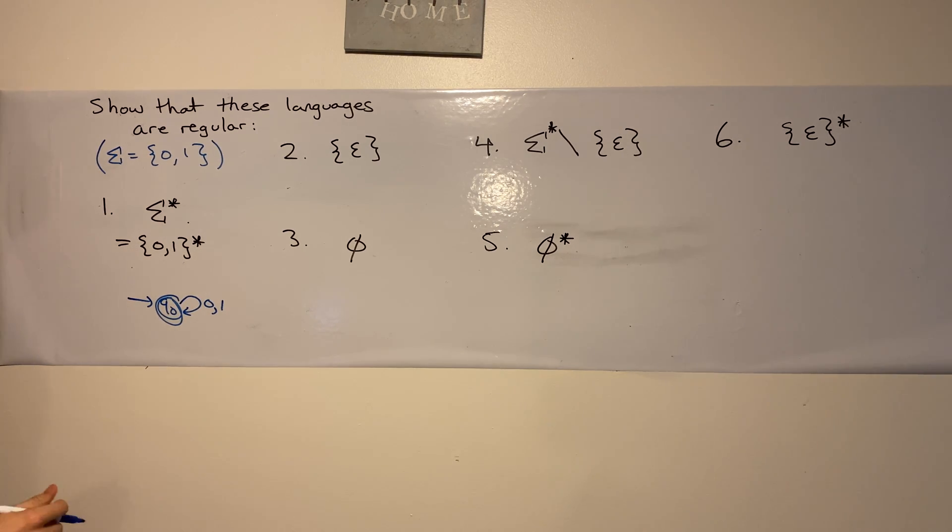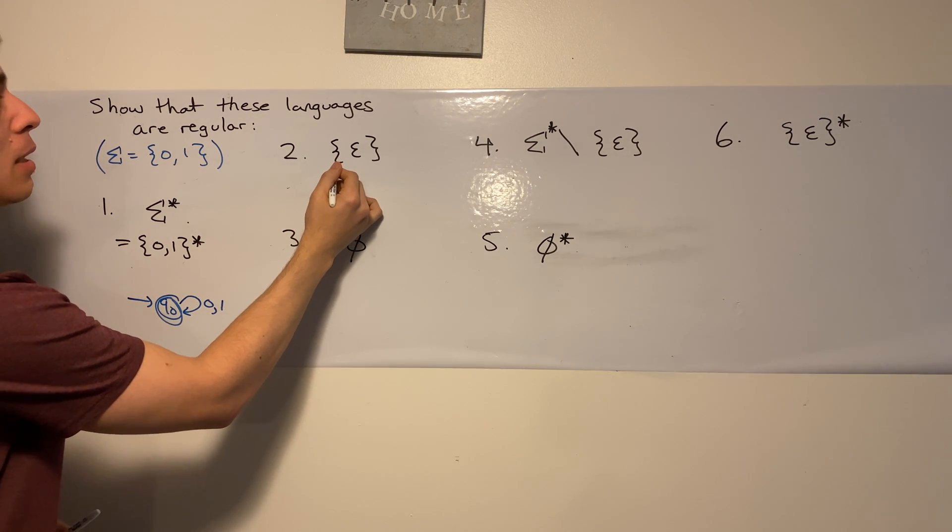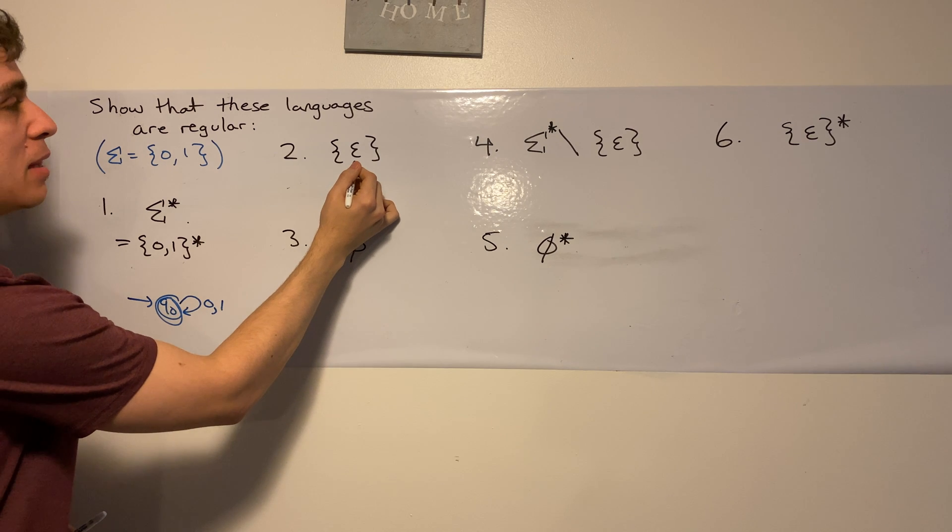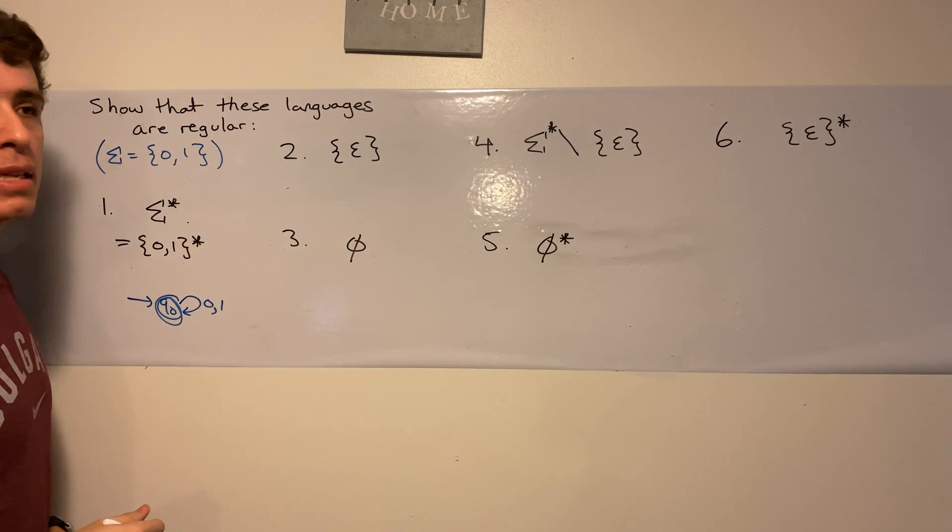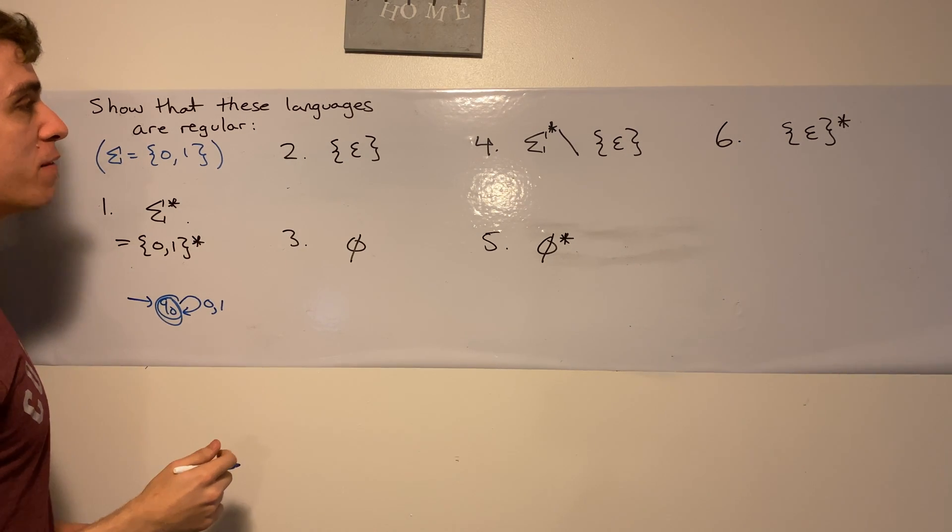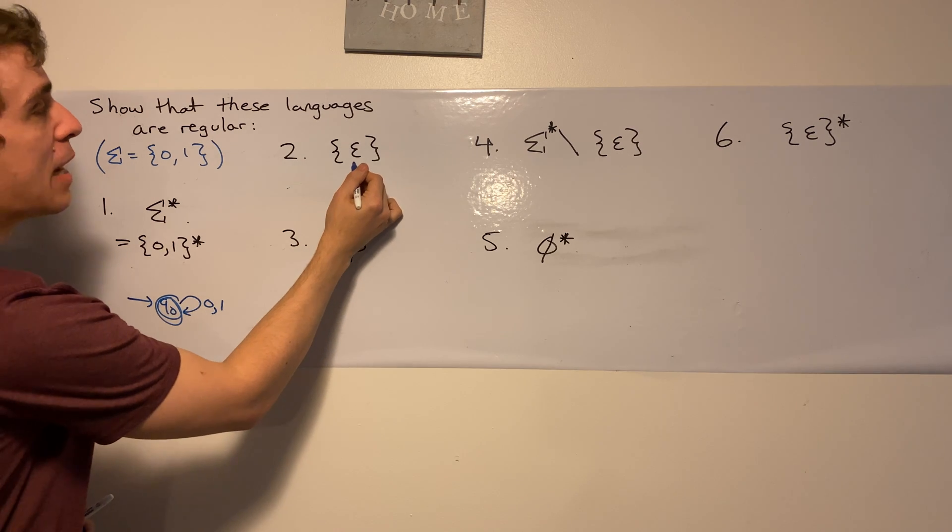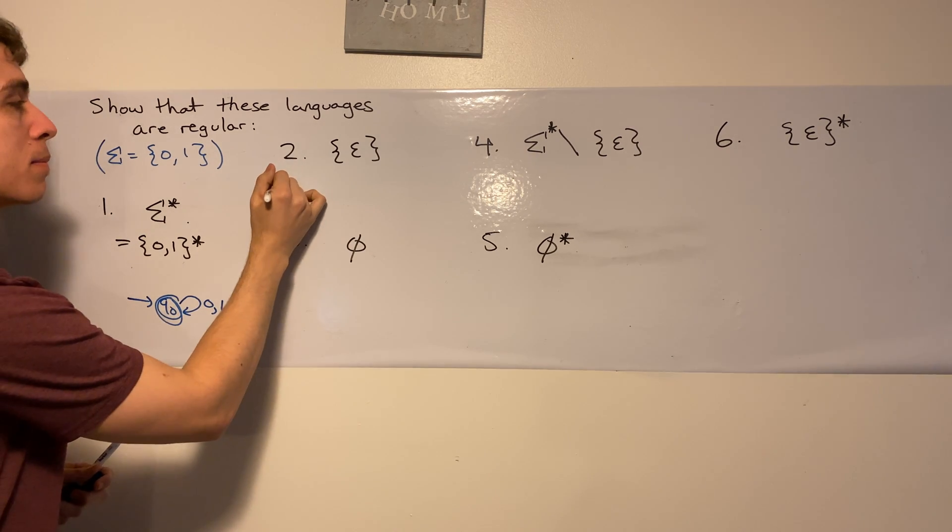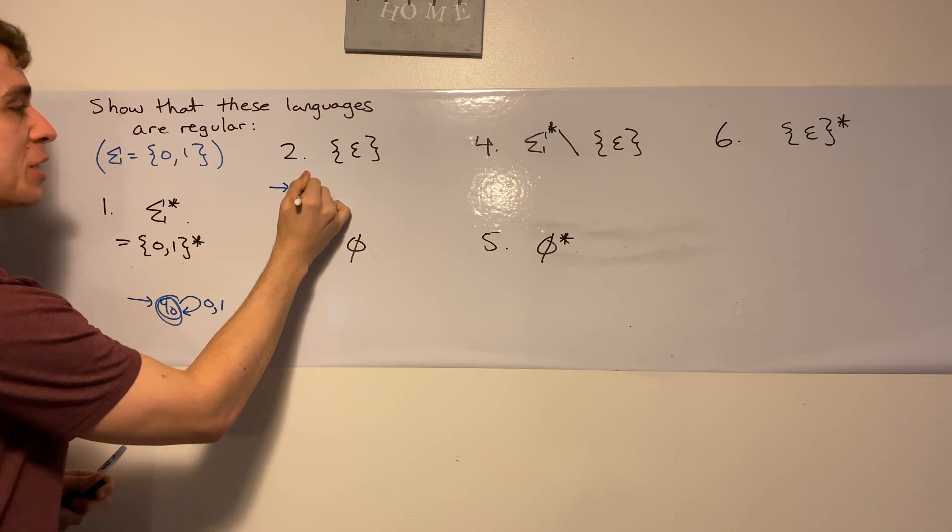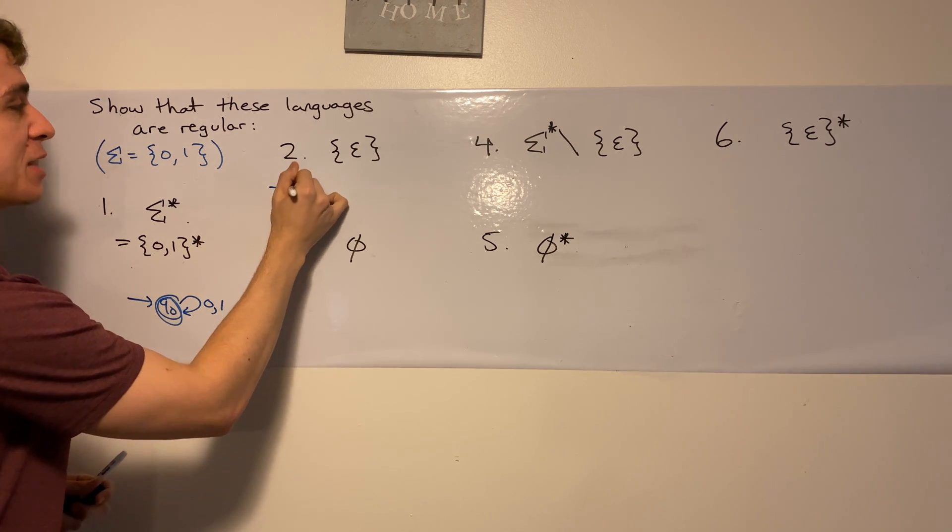That was pretty easy. Now let's go over to the second one, which says we want the set with the empty string as the element of that set. So that means we have to accept the empty string. So let's make a really simple DFA that accepts the empty string.